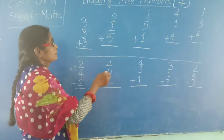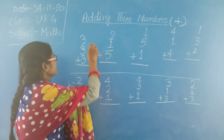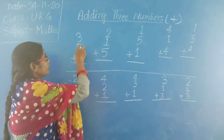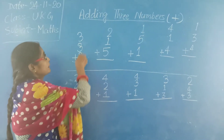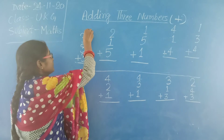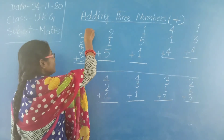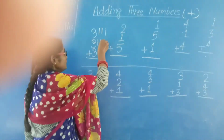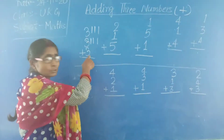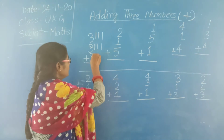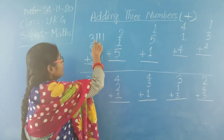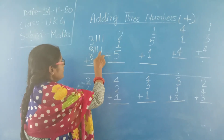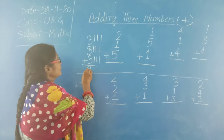Here I have taken some numbers. First: 3, 3, and 3. Here are 3 numbers. When I draw lines, the first number is 3, so we will draw 3 lines: 1, 2, 3. The second number is also 3: 1, 2, 3. The third number is also 3, so we draw 3 lines: 1, 2, 3. Now we count: 1, 2, 3, 4, 5, 6, 7, 8, 9. The answer is 9.